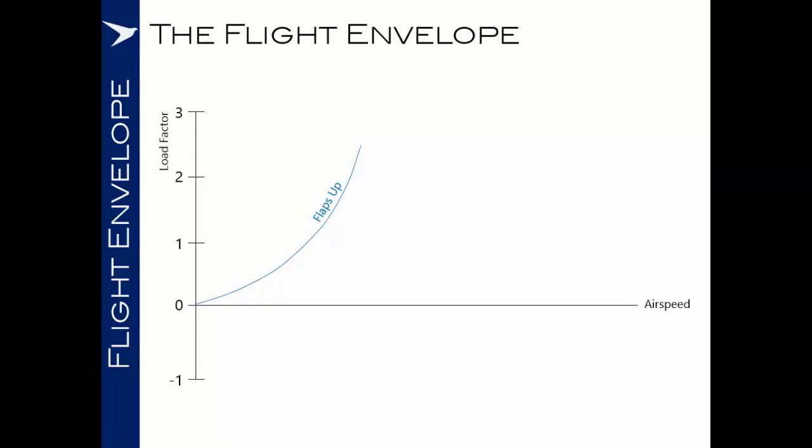As this flight envelope diagram is outlining the limits of what is possible with the aircraft, trying to exceed this load factor at low airspeeds anywhere along this curve will mean that we are exceeding the maximum amount of lift that the wing can generate.